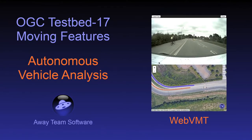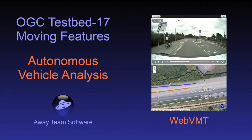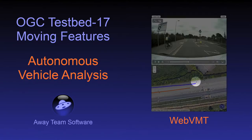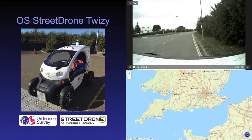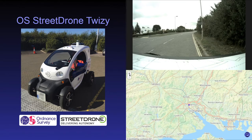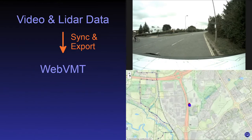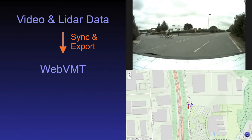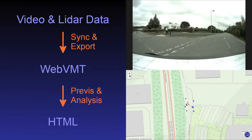Web Video Map Tracks, or WebVMT, is an open format designed to synchronise location with video for the web. In Testbed 17, a WAI team analysed LiDAR detections and video from a street drone autonomous vehicle by developing a set of reusable WebVMT utilities to synchronise data in order to track nearby objects and demonstrate the benefits of multi-sensor aggregation and browser integration.